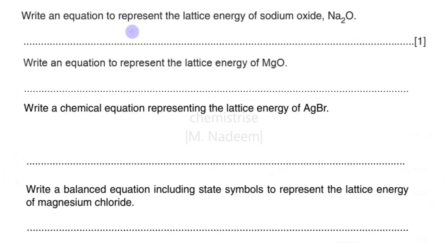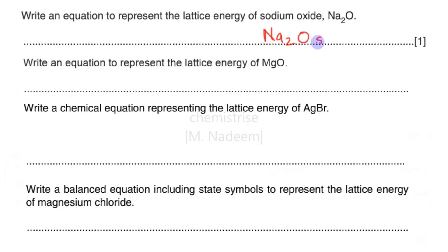Now let's look at some exam questions. In this question we have to construct equations related to lattice energy. For sodium oxide, the requirement is that we always make one mole of an ionic solid from its gaseous ions. So it will be: 2Na⁺(g) + O²⁻(g) → Na₂O(s). We write two for sodium.